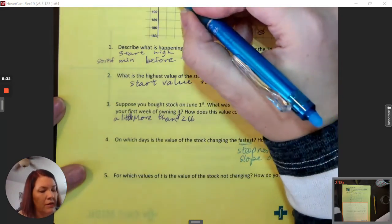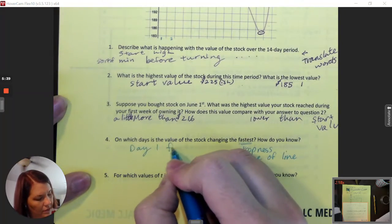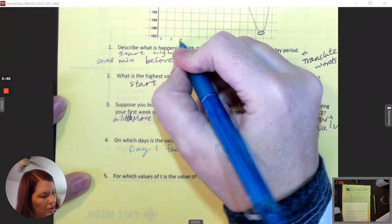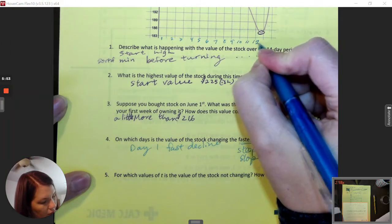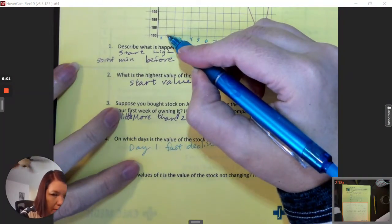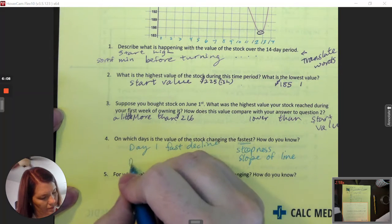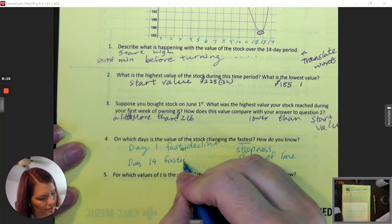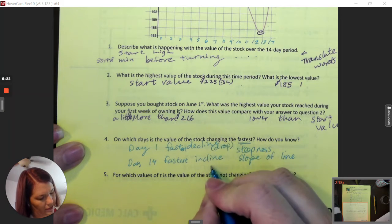So it's changing the fastest on day one, which is a fast decline. And then counting, one, two, three, four, five, six, seven, eight, nine, ten, eleven, twelve, thirteen, fourteen. So I would say on the fourteenth day. This is day one which ends here, day two, day three, day four, so day fourteen.